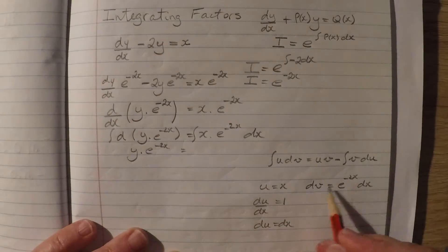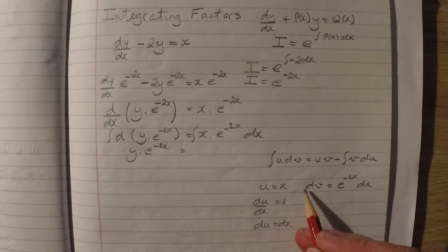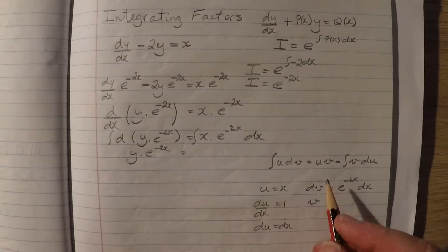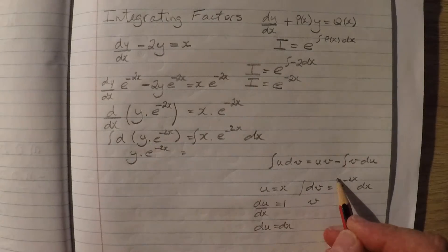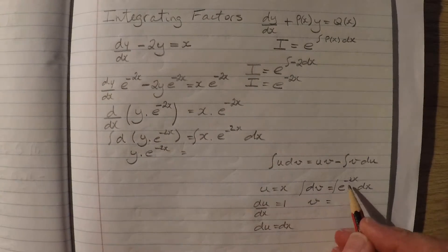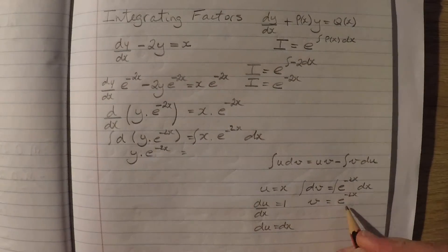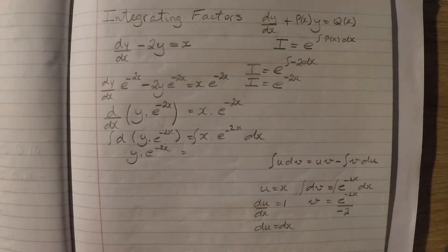For this one, I'll need to integrate. The integral of this is v. The integral of e to the negative 2x is e to the negative 2x over negative 2.